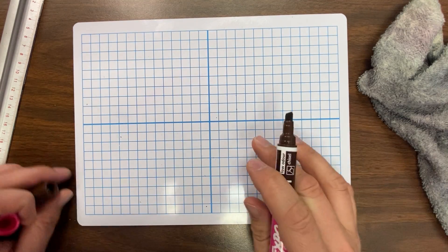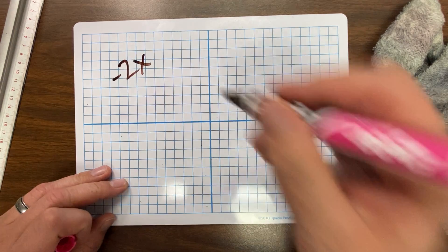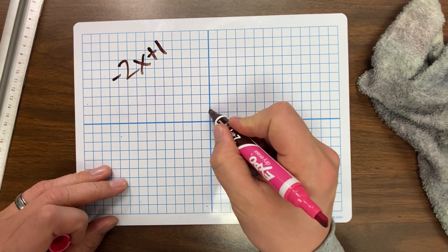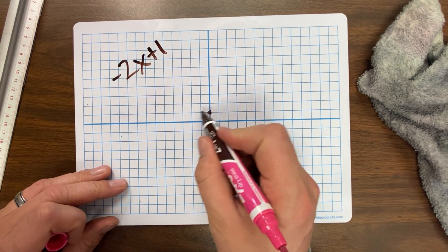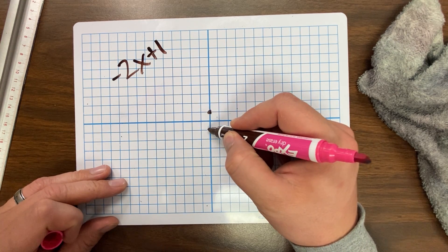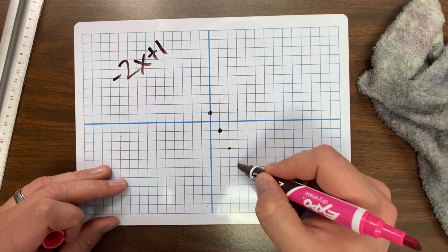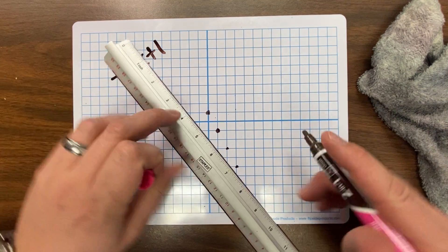So if I come back over here, my was negative 2x. I should write it up here for you. Negative 2x plus 1. So I go plus 1 is right here because I went up 1. Negative 2 though means rather than going up 2 over 1, I go down 2 over 1. Down 2 over 1, down 2. I keep going. Then if I connect my dots.